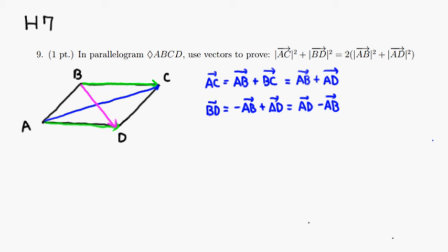Then you can just start from the left-hand side. So this is our left-hand side. Then say left-hand side of the equation is equal to, AC is same as this, so we can just do the norm of AB plus AD squared